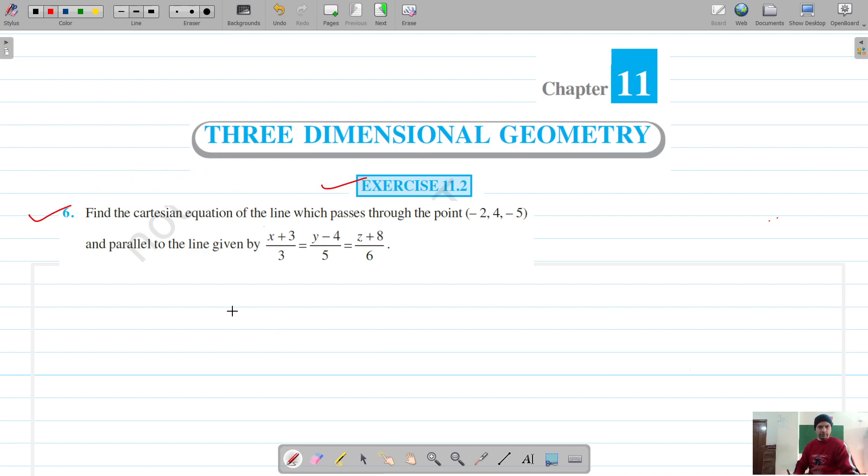Question number 6 for exercise 11.2. We have to find the Cartesian equation of the line that passes through this point and is parallel to the line whose Cartesian form is given. The Cartesian equation of a line that passes through a given point is x minus x1 by a equals y minus y1 by b equals z minus z1 by c.